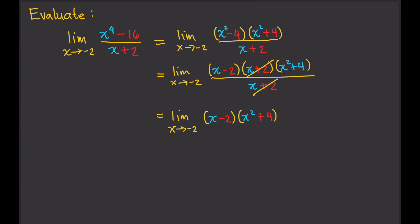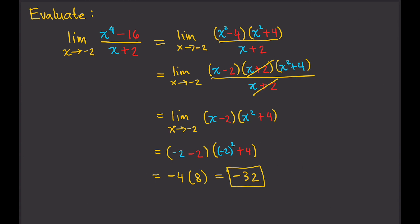Then we can plug in negative 2. So that's negative 2 minus 2, which is negative 4, times negative 2 squared plus 4, which is 4 plus 4 equals 8. So that gives us negative 4 times 8, which is negative 32.